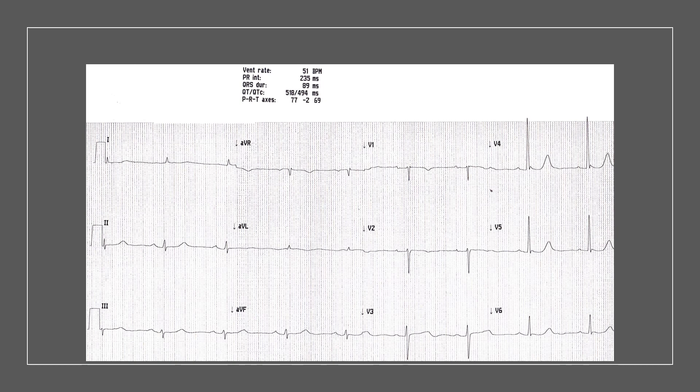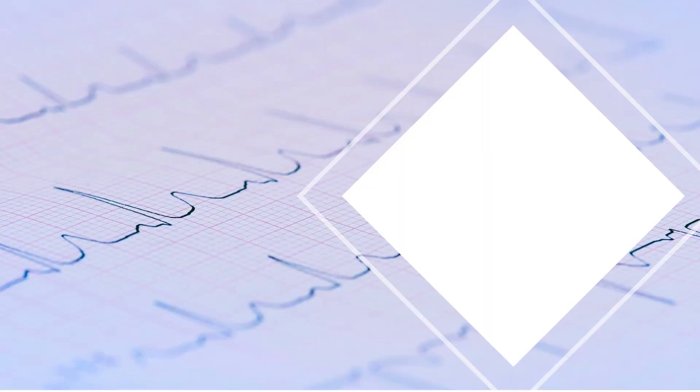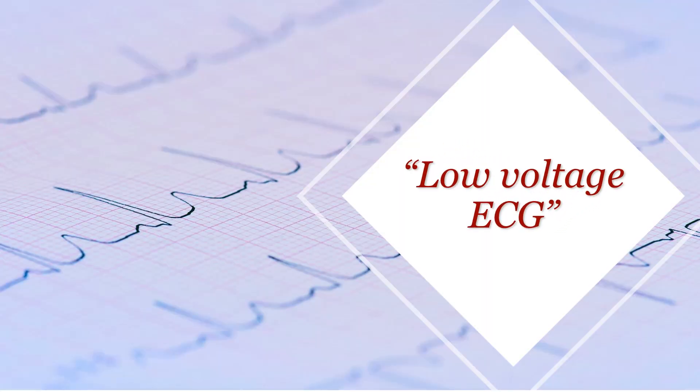Moving on to the last and final question of our ECG interpretation approach: what else can we see in this ECG? There is another finding in this ECG that we should pick, and it's going to give us the clue to the answer for this case. And that finding is the voltage of this ECG — this ECG showed low voltage. So let's talk about this topic.